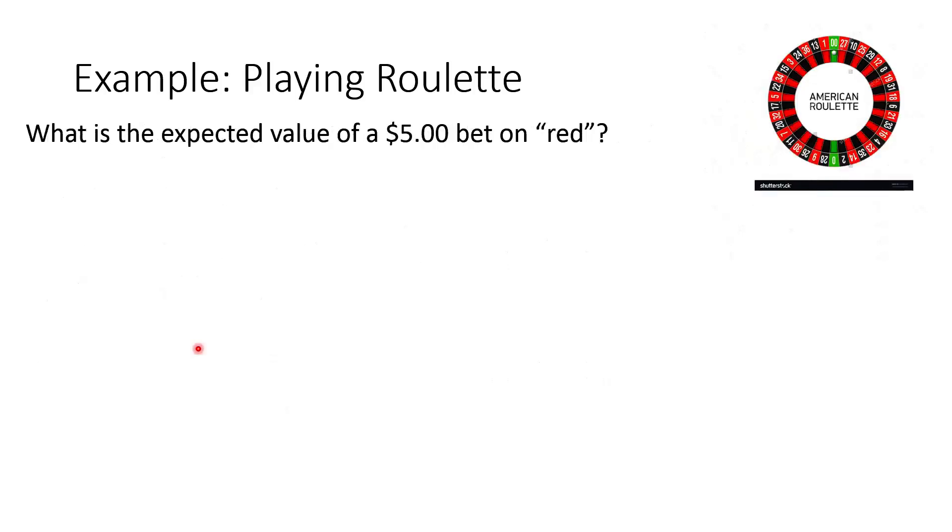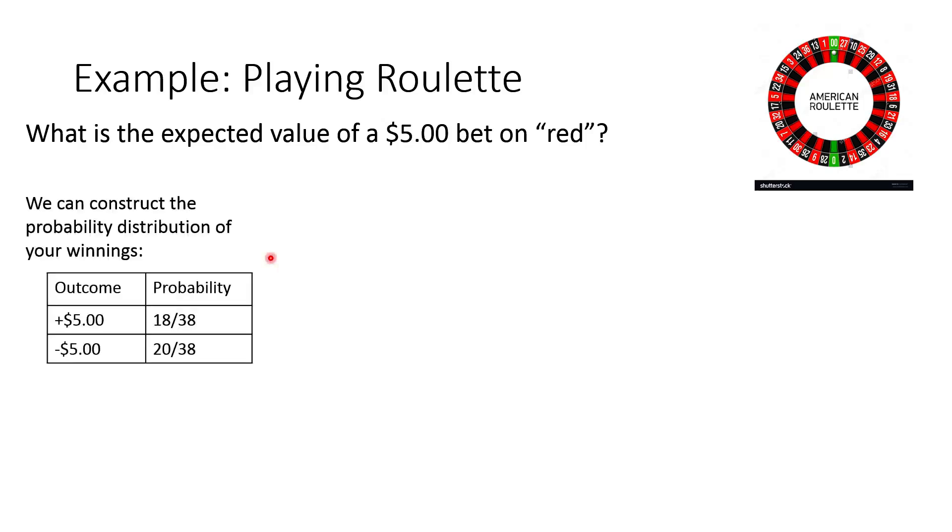So let's think about this. What we need to do is, we need to turn our winnings or our outcomes into a probability distribution. When you think about playing this game, and you're making a $5 bet on red, there's really only two possibilities. You're going to win, and you're going to come out ahead $5, or you're going to lose, and you're going to come out down $5. Well, what's the probability of this happening? Well, you're winning when you land on a red, so that's going to happen 18 out of 38 times. And you're losing when you don't get a red, and that's the other 20 out of 38 slots.